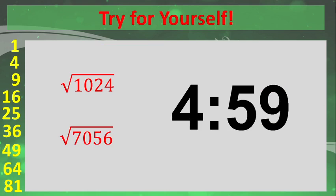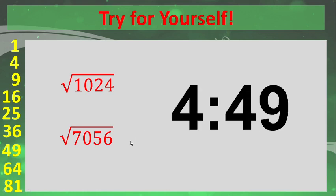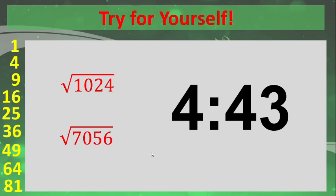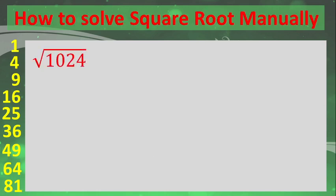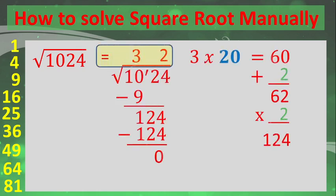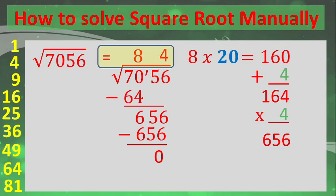Now try these practice problems yourself — get paper and pencil to solve. Pause the video if you need more time. The first problem is the square root of 1024, and the answer is 32. The second problem is the square root of 7056, and the square root of that is 84.